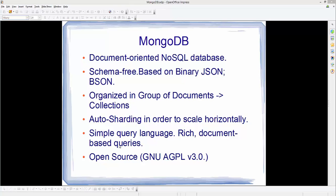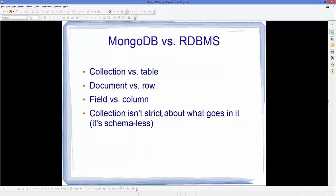It's an open-source database. Now let's see the difference between MongoDB versus relational databases. As I already told you, MongoDB uses collections versus tables. In normal relational databases like MySQL, they use tables, but in MongoDB instead of tables we use collections. Inside these collections we have documents instead of rows. In a relational database, every table can contain multiple columns and rows — the replacement for a row in MongoDB is a document.